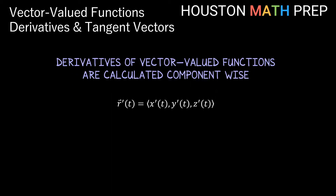When we differentiate a vector-valued function, we simply evaluate the derivative of each component independently using the typical rules for differentiation. Since each component — the x, y, and z components — are scalar functions inside of this vector function, so long as we remember our derivative rules and formulas, we'll be okay.